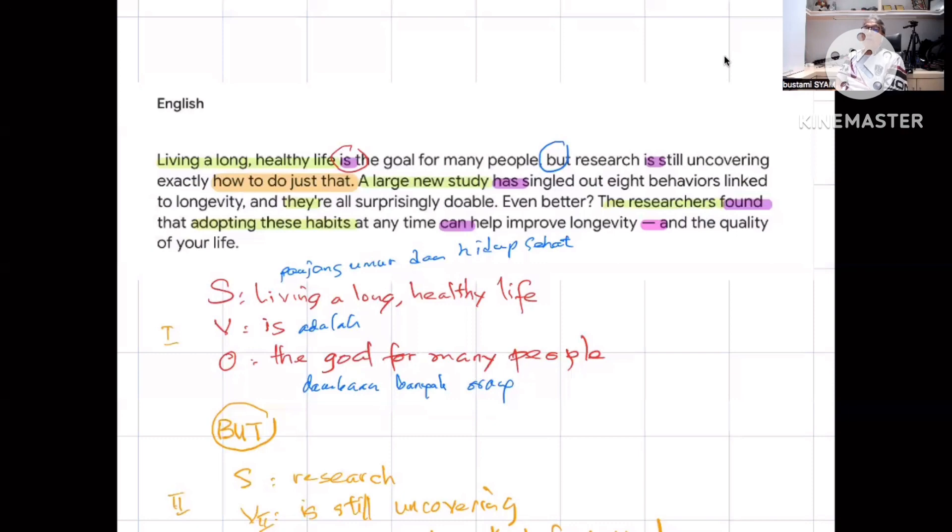Is it in the first sentence? Let's see: 'Living a long healthy life is the goal for many people, but research is still uncovering exactly how to adjust that.' This is not a simple sentence. Why? Because there are two independent clauses connected by what we call a connector. So this is a compound sentence.